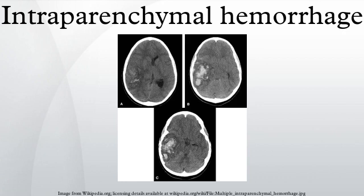Lobar haemorrhage may present with contralateral hemiparesis, homonymous hemianopia, abulia, aphasia, neglect, or apraxia. Caudate nucleus haemorrhage may present with contralateral hemiparesis, contralateral conjugate gaze paresis, or confusion.